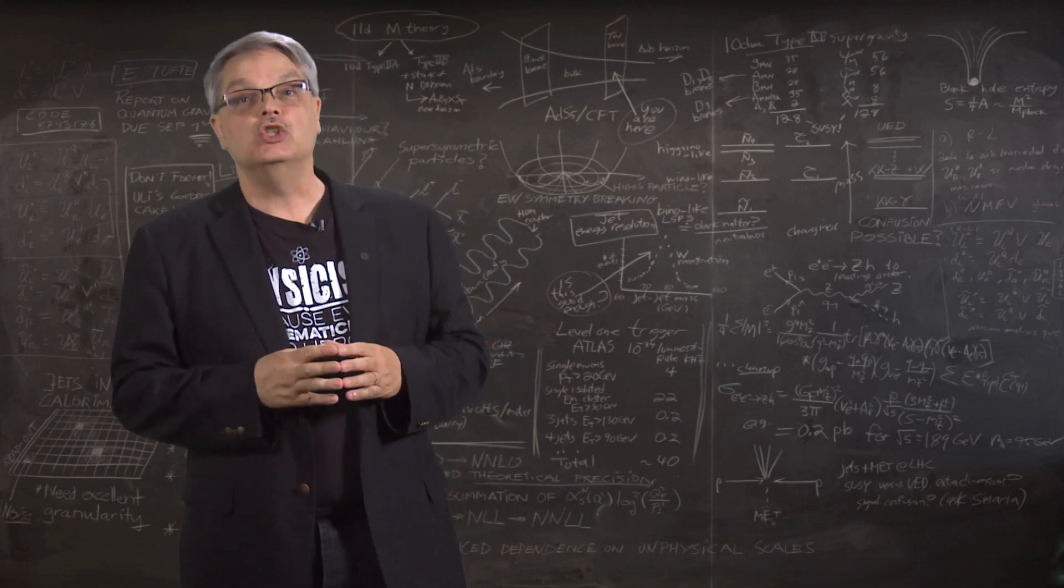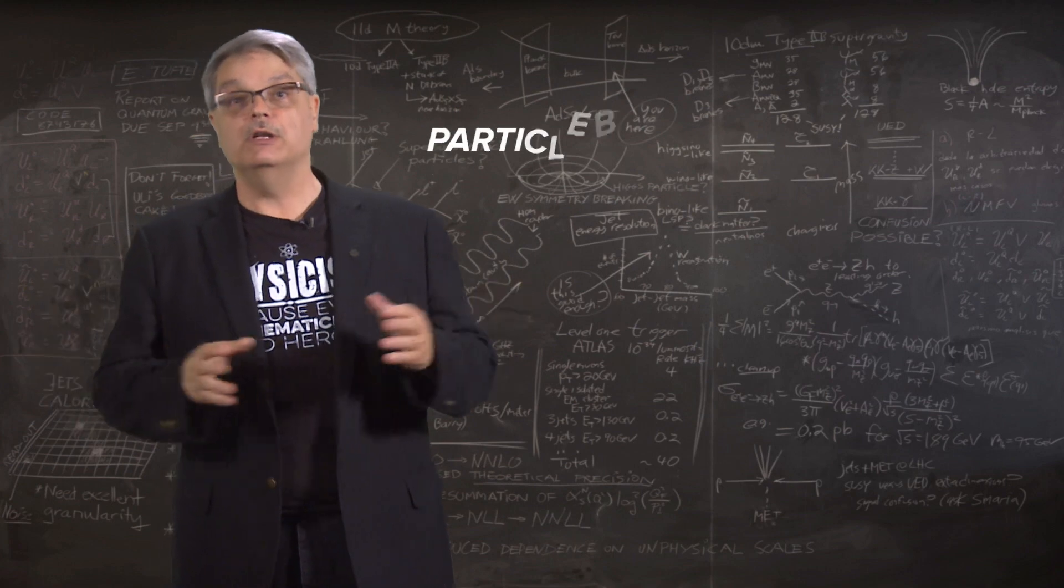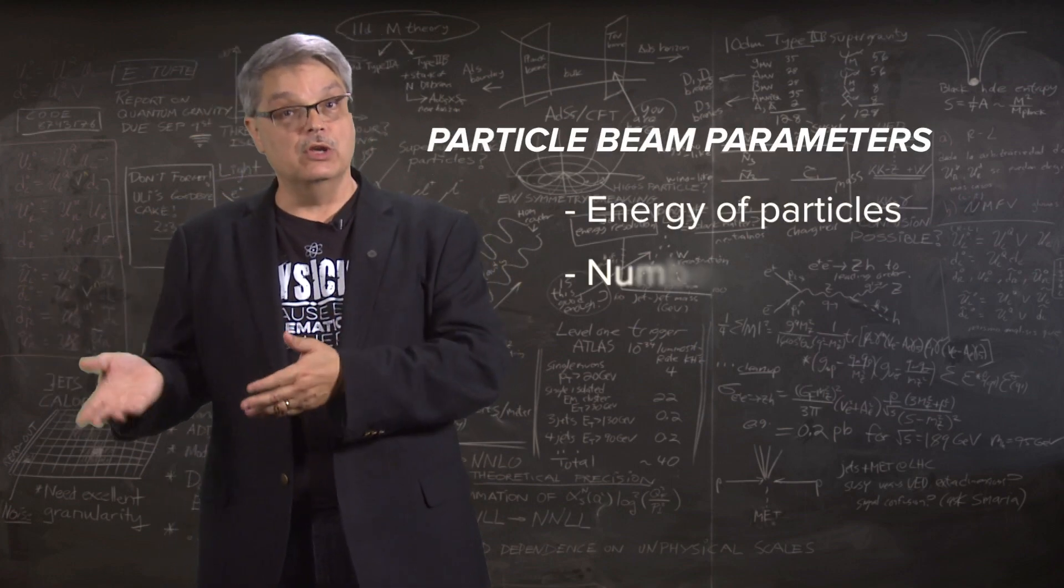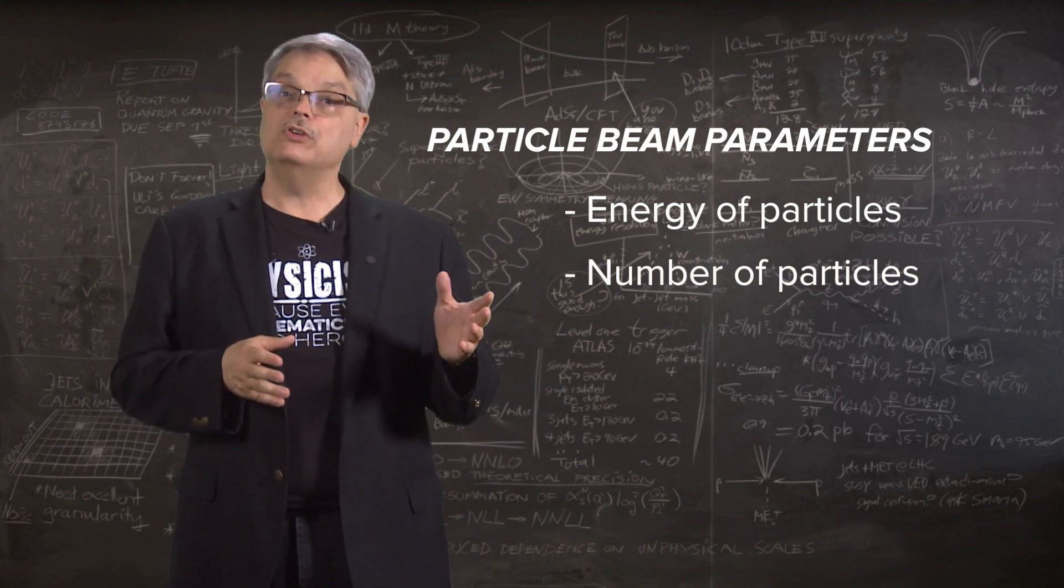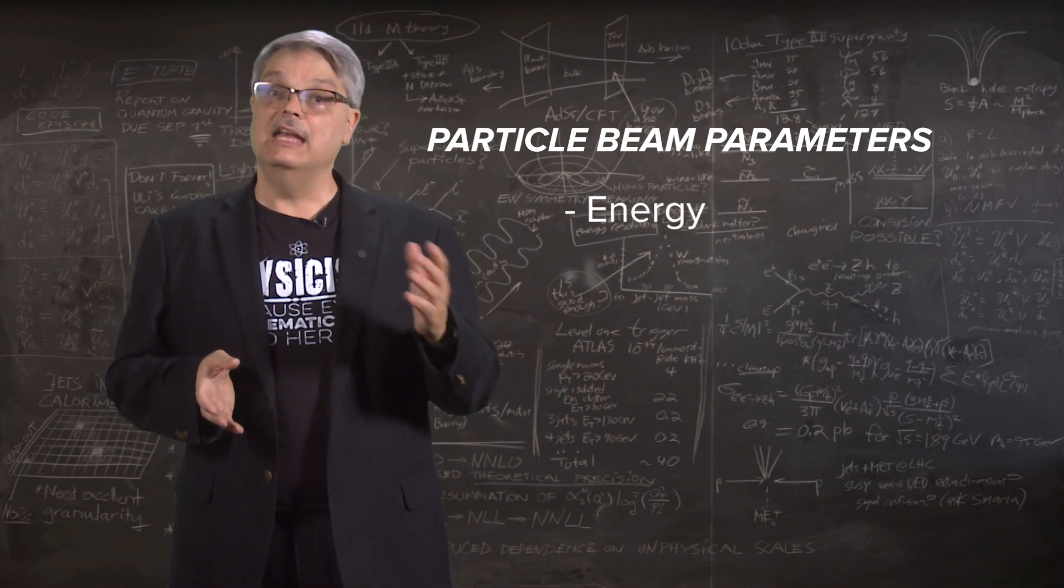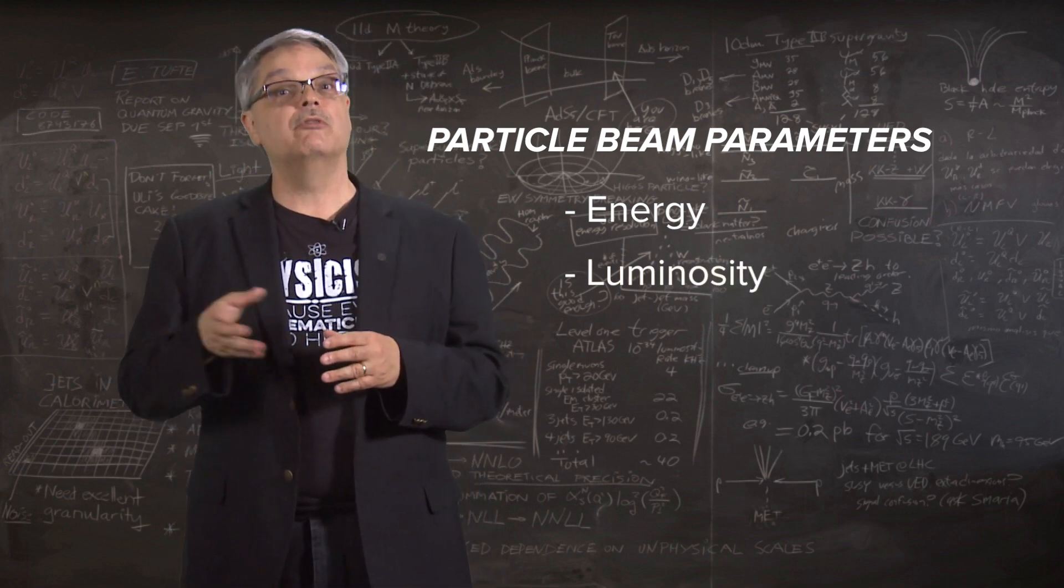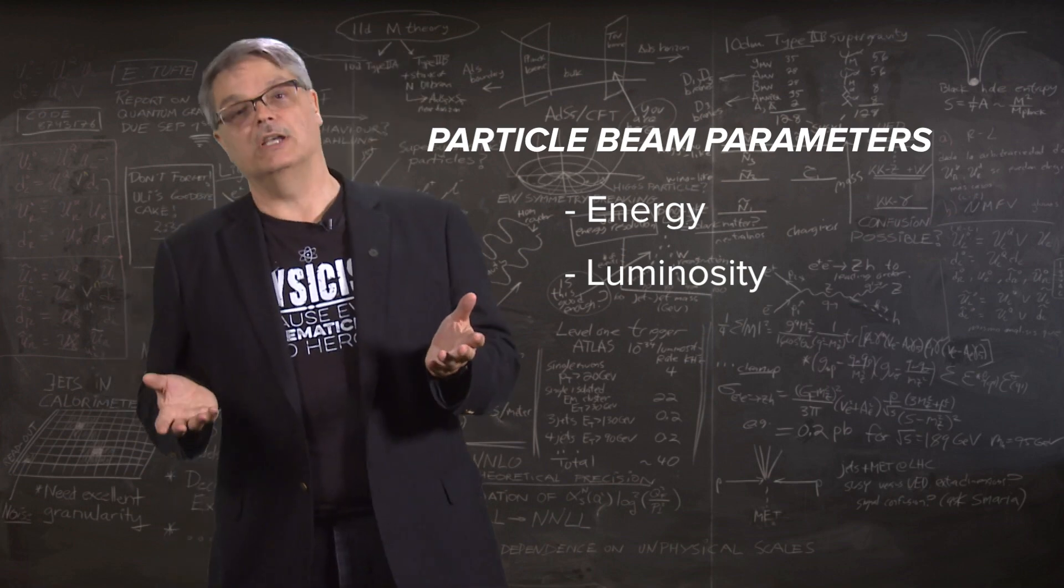This illustration shows that when we scientists make a beam of particles, there are two different important parameters. One is the energy of the particles and the second is the number of particles that are accelerated. To simplify things, we'll call the first important parameter energy and the second one luminosity. Luminosity depends, among other things, on the number of particles in a beam. So those are our terms: energy and luminosity.